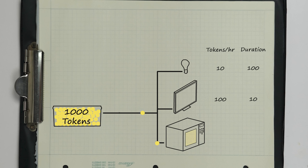But the microwave uses a thousand tokens per hour, so it could empty the battery in just one hour of use.